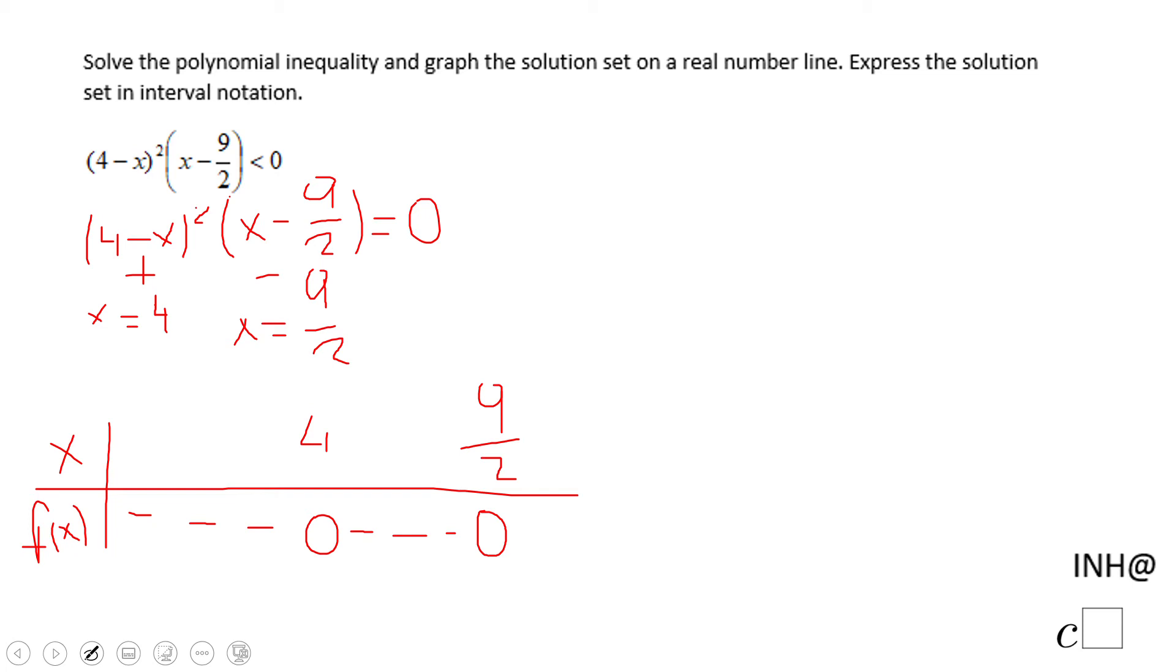And we have one more interval to check, and that will be for values greater than 9/2. Let's see what happens with the sign here. This will be positive. Again, no issue here. And when x is greater than 9/2, the second factor, x minus 9/2, will be positive. So here we have a sign change and it is positive.